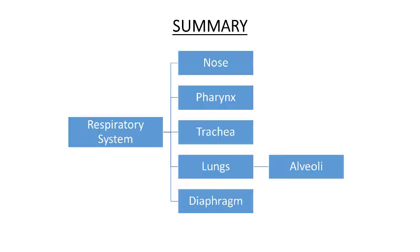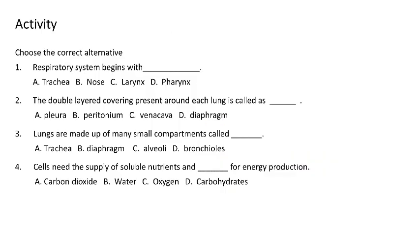Today we have seen the explanation of the respiratory system. It consists of five main parts: nose, pharynx, trachea, lungs, and diaphragm. The small compartments in the lungs are known as alveoli. The walls of the alveoli and capillaries are extremely thin, which allows gaseous exchange to take place easily. Try to solve the activity shown. Thank you.